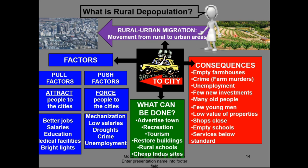Now we need to know why people move from the rural area to the urban area. That movement is associated with push and pull factors. Be very, very careful when you answer your question that you don't get these two mixed up. If they say to you, discuss the factors that will lead to rural depopulation, which means it's the push factors — in other words, why am I going to move away from this area?